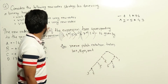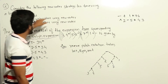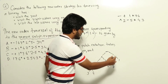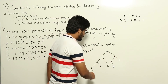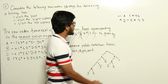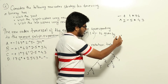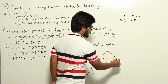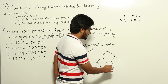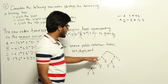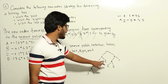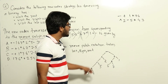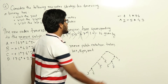In new order traversal, first we print the root value, then visit the right subtree, then the left subtree. So we print minus first, then the values in the right subtree, then the left subtree. The new order traversal: first minus, then we come to this part — print plus, then 1, then come to star — print star, then 7, then 6. Then come to this part: print power, 2, then print minus, then 5, then come to this tree and print star, then 4, then 3.